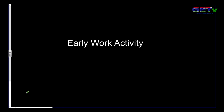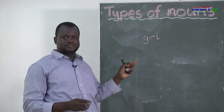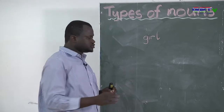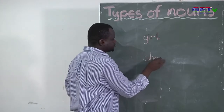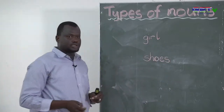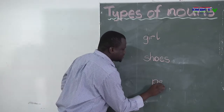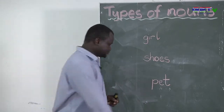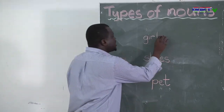So basically, we are going to start with an early work activity. I want us to look at nouns. Examples of nouns: for example, girl — you all know that girl is an example of a noun, a name of a person. Another example could be shoes. And the other one is pet. Now let's look at these three nouns. Can you give me examples of names of girls?